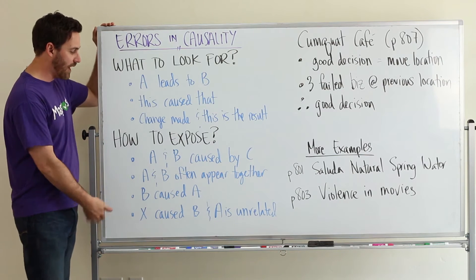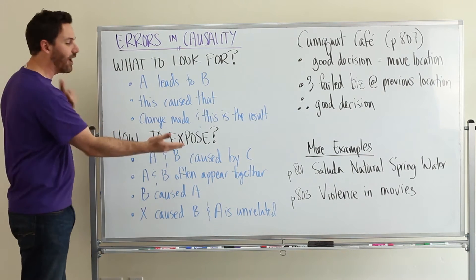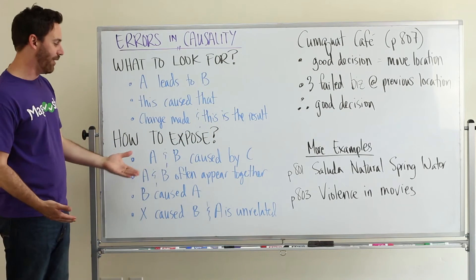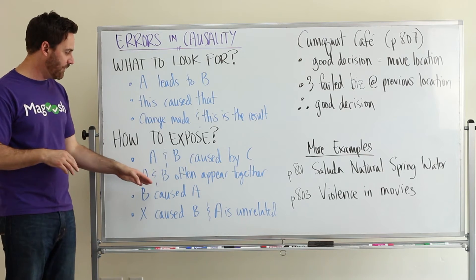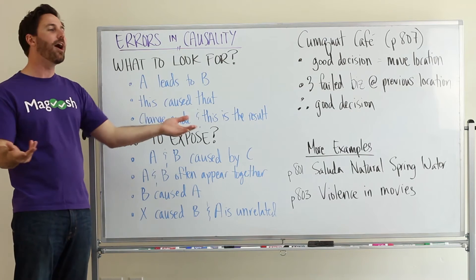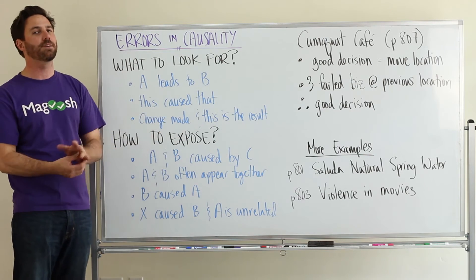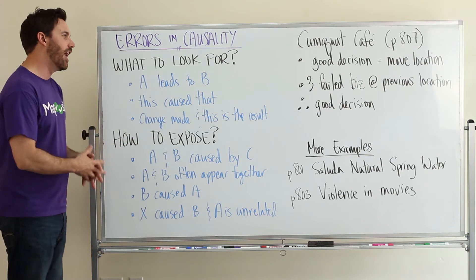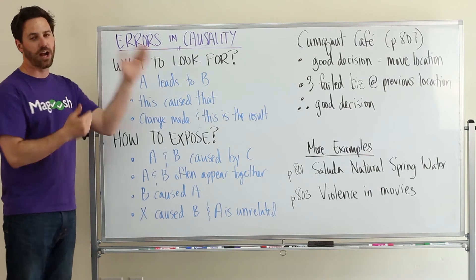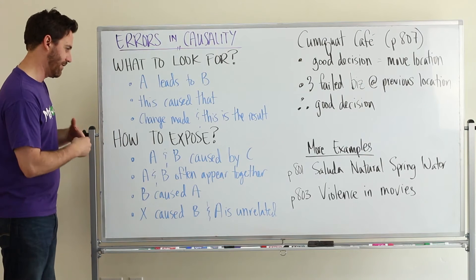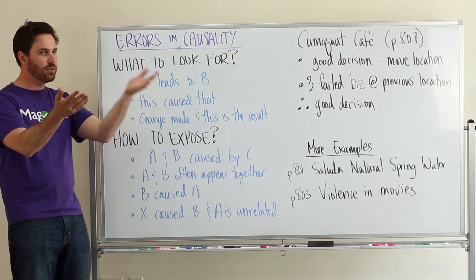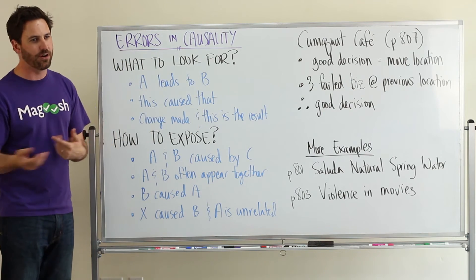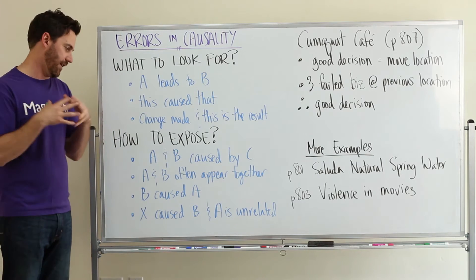So, things you could talk about. You could say, well, A and B were actually caused by C. There was this other thing you didn't even know about that caused both of them. Or, you could talk about how A and B often come together. They often appear at the same time. And this is when people will talk about things, people confusing correlation for causation is the common phraseology. And so people see two things, and they appear sort of at the same time, and they assume that one of them caused the other, when really they might just be correlated.